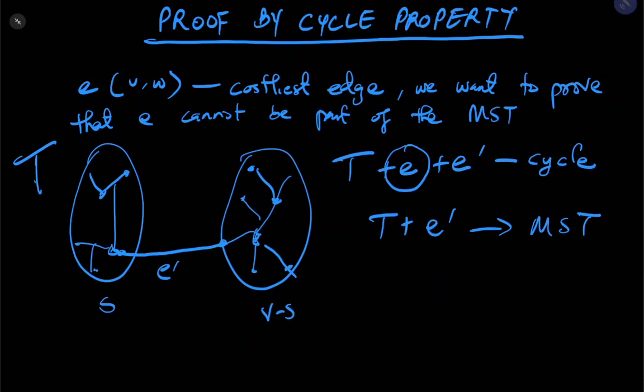To write down this proof more elegantly, we want to use both our illustration and a proof by exchange technique. And in the proof by exchange technique, we simply introduce another edge, that is E prime.